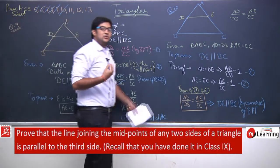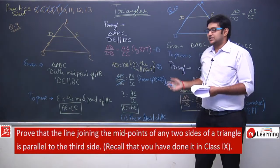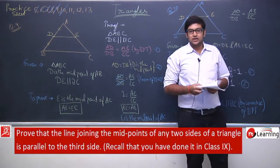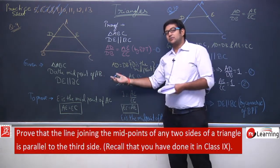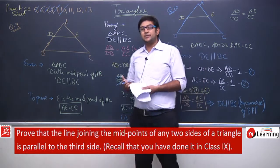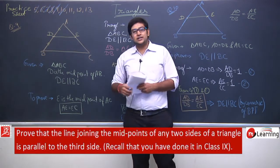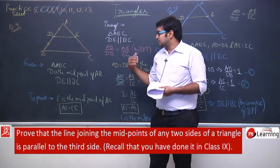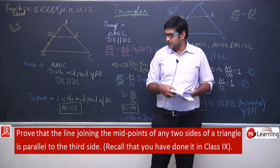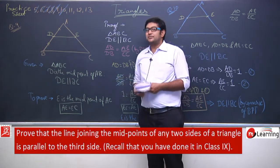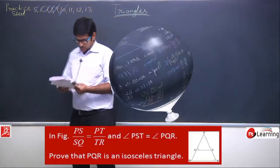Both questions 9 and 10 are easy — not much difficulty. This is important because it is the proof of a theorem from class 9 congruency, now being proved using the concept from this chapter on similarity of triangles. This completes question number 10.